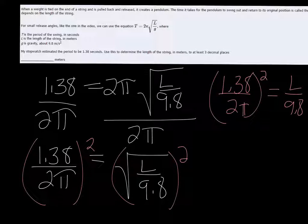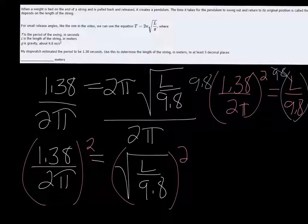Now the last step to get l by itself would be to multiply both sides by 9.8. So the 9.8 on the right cancel, and now I'm ready to go ahead and put it all in my calculator.